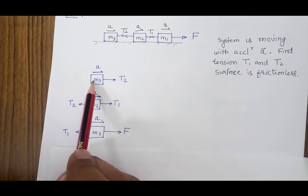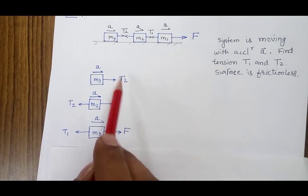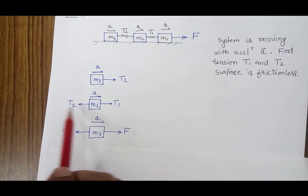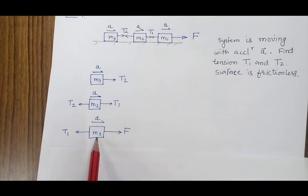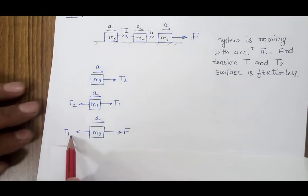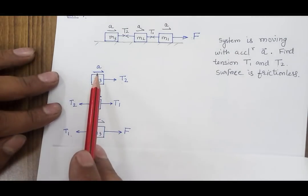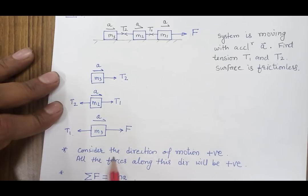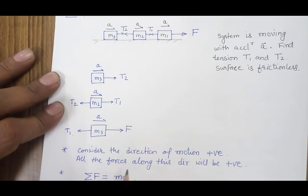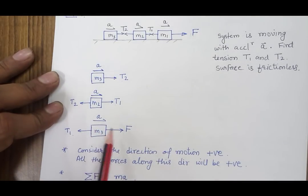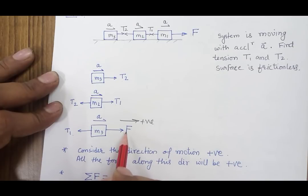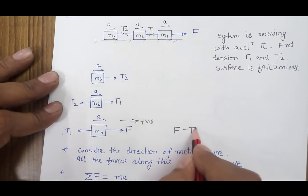We make the free body diagram for three masses. For mass M3 there is only tension T2 and the system is moving with acceleration a. For the second mass, tension T1 acts toward the right and tension T2 toward the left. For the third mass there is force F and tension T1. Our sign convention is that the direction of motion will be positive — all forces acting in the direction of motion are positive.